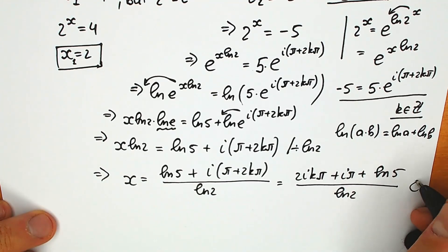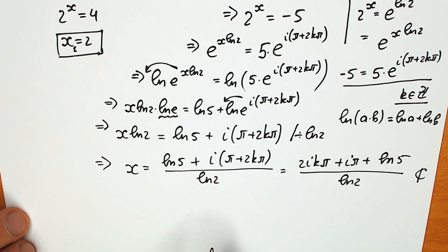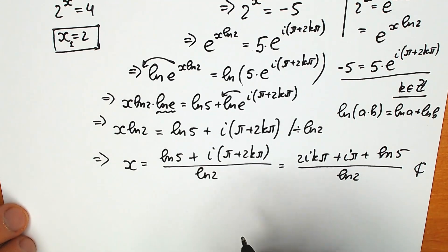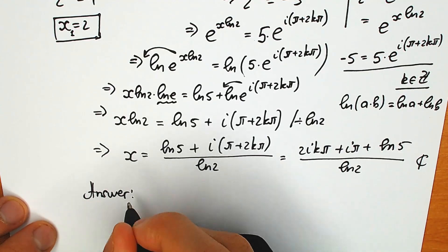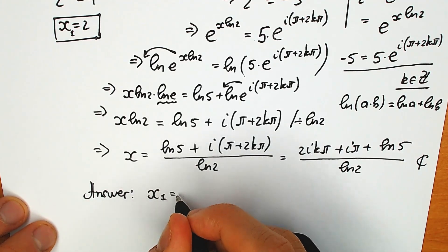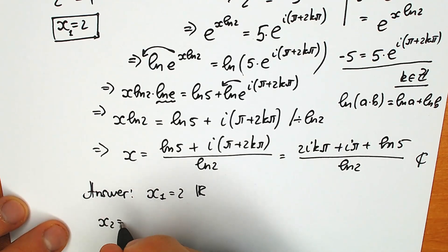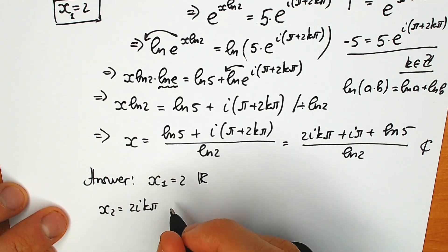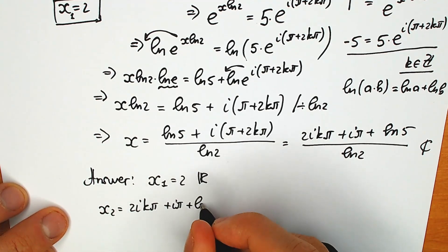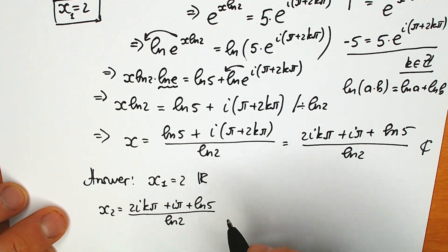So this root is complex, and this root is a real number root. Our final answers: x₁ equals 2 — the real number root — and x₂ equals (2ik·π + i·π + ln 5) all over ln 2 — the complex root.